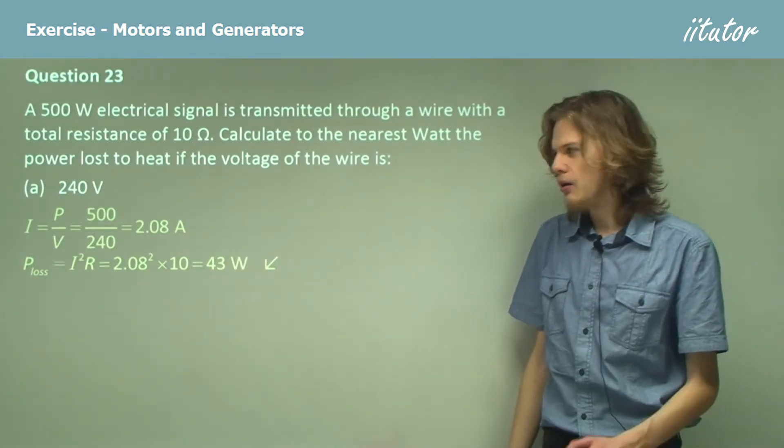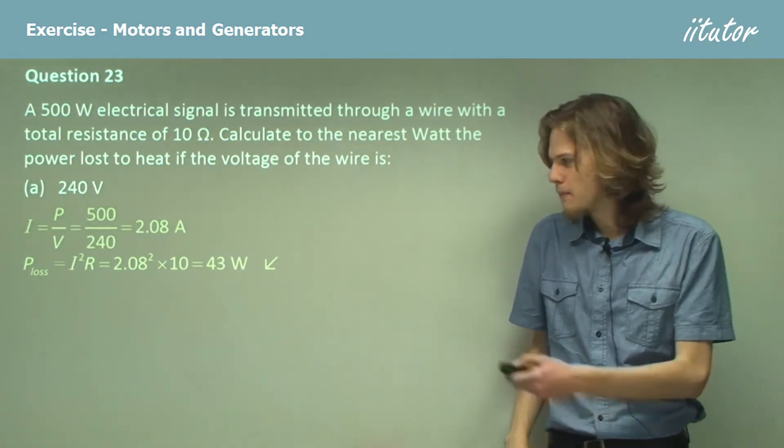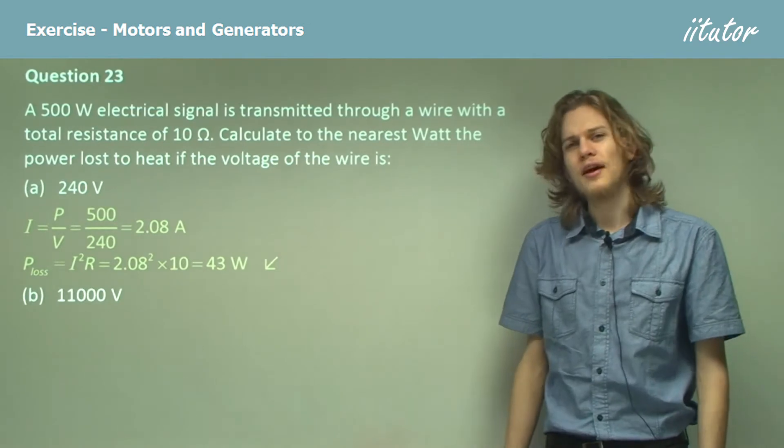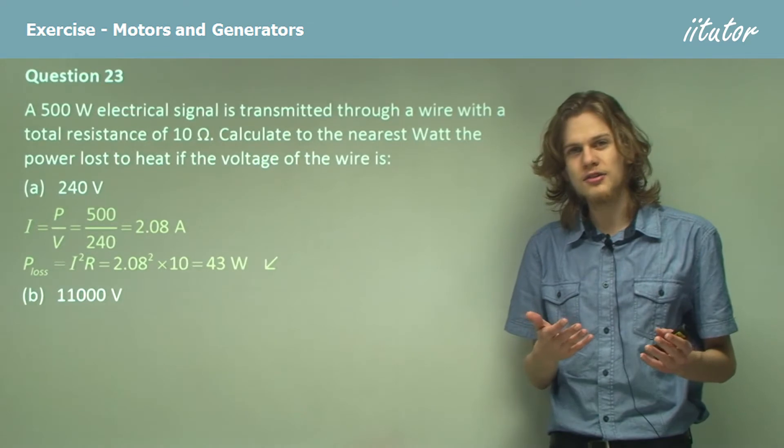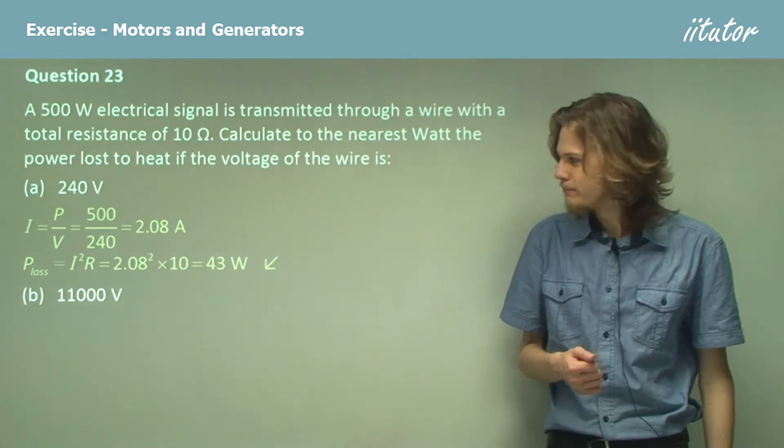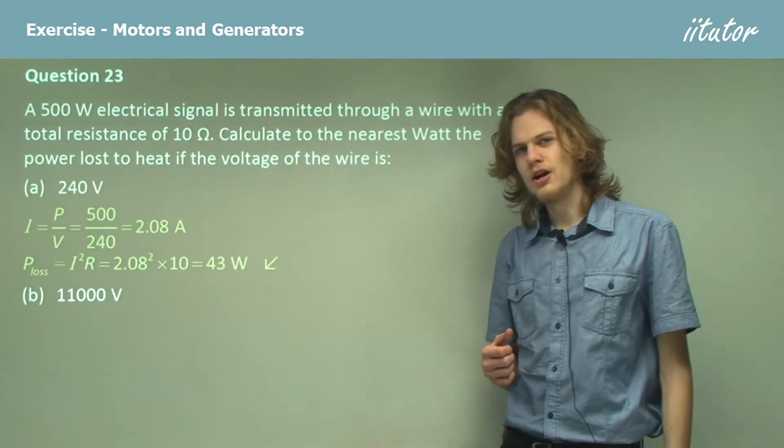Alright, so now let's take our signal and step it up to a very high voltage. Let's say 11,000 volts, which is about the voltage of very high voltage transmission lines that go very long distances. Alright, so in this case what's the current?